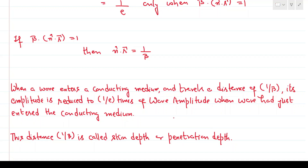Viewers, note that the amplitude is reduced to 1/e of the wave amplitude when the wave had just entered the conducting medium, not the amplitude at the surface — because boundary conditions at the interface determine the transmitted wave amplitude in the conducting medium.